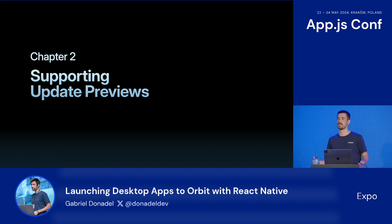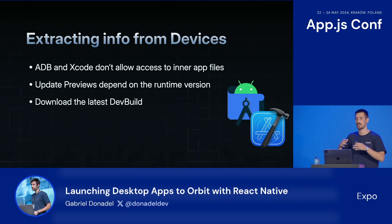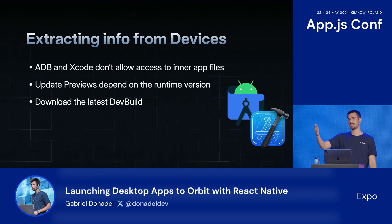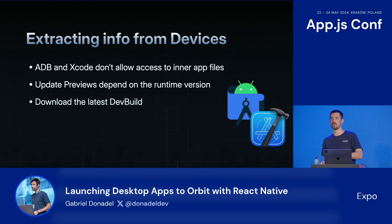With all these pieces in place, the next logical step was just adding support for update previews. As some of you may know, update previews rely on this thing called runtime version of your app. Unfortunately, from an ADB and Xcode internal CLI perspective, you can't really retrieve all the necessary information from a remote app or an app that's not in debug mode. So to simplify that, what we did for Orbit was just try to download the latest dev build available on EAS for the specific runtime version that your update uses. And if that's not available but you already have the app installed on your device, we'll fall back to the custom deep link schema and just launch the update directly for you.